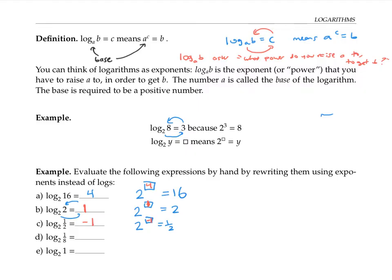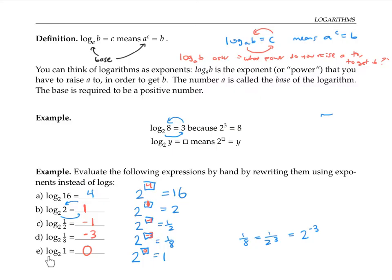Log base two of one eighth means what power do we raise two to in order to get one eighth. Since one eighth is one over two cubed, we have to raise two to the negative three power to get one over two cubed. So our exponent is negative three, and that's our answer. Finally, log base two of one is asking two to what power equals one. Anything raised to the zero power gives us one, so this log expression evaluates to zero. Notice that we can get positive, negative, and zero answers for our logarithm expressions.